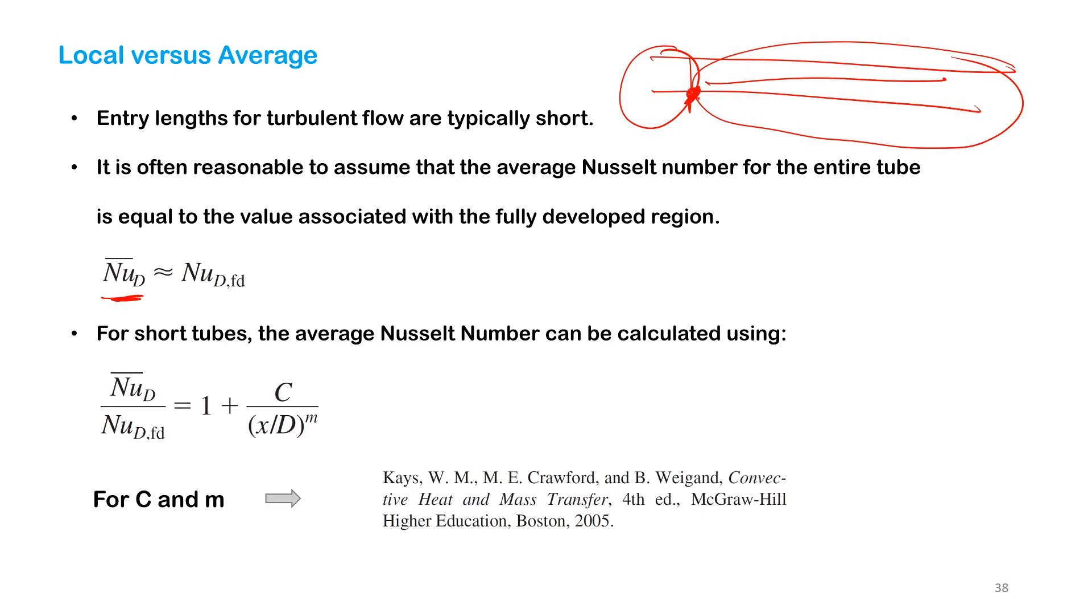But if you have a short tube where the entrance region is important relative to the length of the tube, then you use this empirical equation. The constants can be found from Kays and Crawford in this book. I'm not going to give you the values, but I'm informing you about this correlation. In most cases in industrial practice, you always have very long pipes.